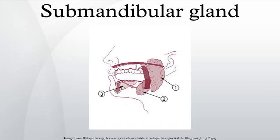Because the secretory cells are of both serous and mucous types, the submandibular gland is a mixed gland, though it is mostly serous. It has long striated ducts and short intercalated ducts. The secretory acinar cells of the submandibular gland have distinct functions; the mucous cells are the most active, and therefore the major product of the submandibular glands is saliva, which is mucoid in nature.